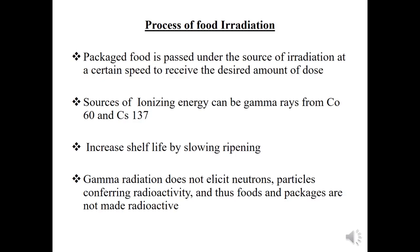Irradiation increases shelf life by slowing the ripening of fruits and vegetables. Gamma radiation does not elicit neutron particles conferring radioactivity, and thus the packaged food is not made radioactive. The foods are safe after irradiation because it does not elicit neutron particles.